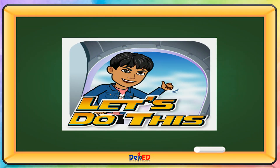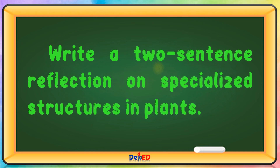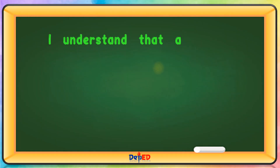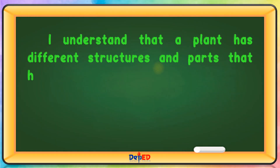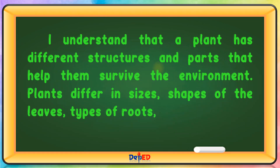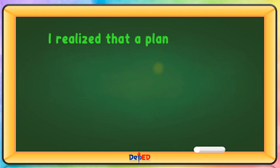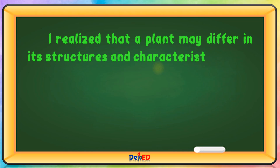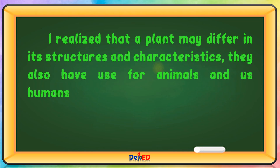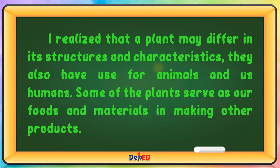Let's do this! Write a two-sentence reflection on specialized structures in plants. I understand that a plant has different structures and parts that help them survive in the environment. Plants differ in sizes, shapes of the leaves, types of roots, and some plants bear flowers and some do not. I realized that a plant may differ in its structures and characteristics. They also have uses for animals and humans. Some of the plants serve as our food and materials in making other products.